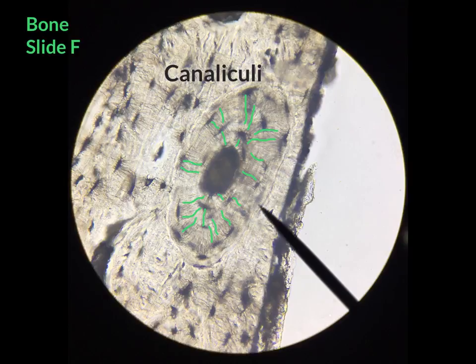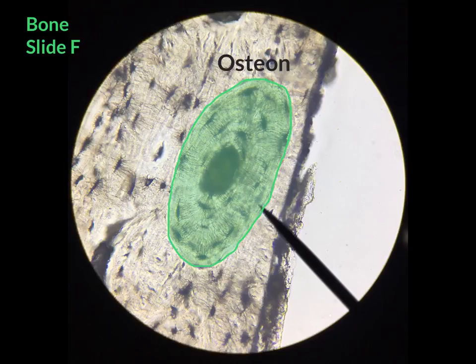These tiny canals connect the Haversian canal, or central canal, to the osteocytes. Their function is to transport nutrients and waste back and forth between the two structures. Collectively, all of these structures form the osteon of bone.